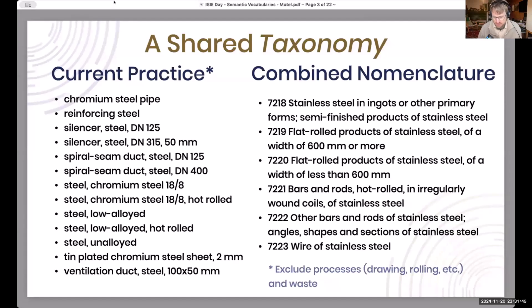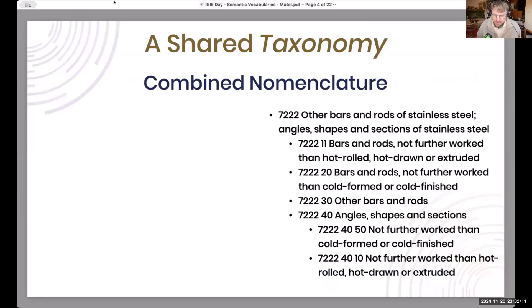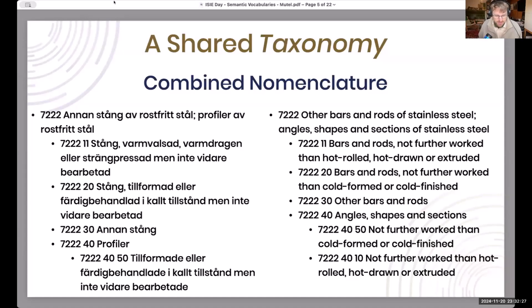The Combined Nomenclature has a lot of detail based on the needs of people actually trading goods across countries, which means it differentiates where there is economic differentiation — and economic differentiation is a good predictor of LCA-related differentiation. It is organized as a taxonomy, a hierarchical system, so you can have broader classifications like metals, steel, stainless steel, and go down to quite specific detail. It is also available in all official European languages.